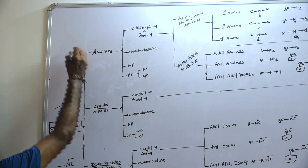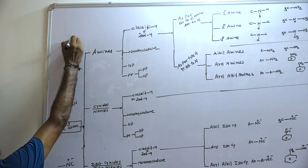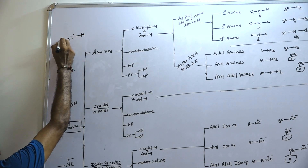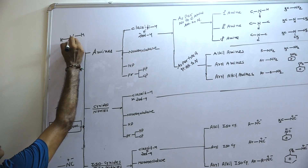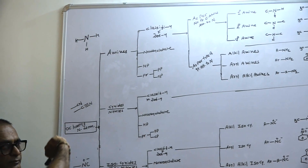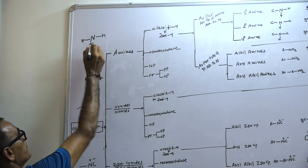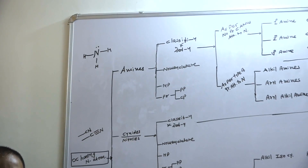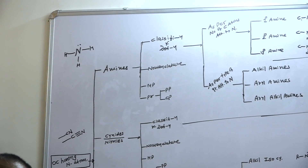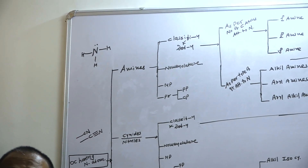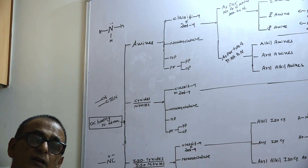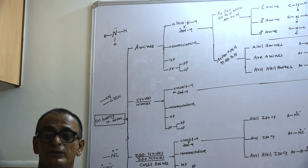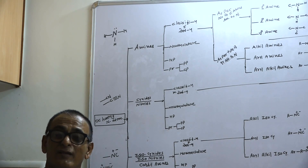Amines are derivatives of ammonia. Ammonia is NH3. When nitrogen forms three bonds, one lone pair of electrons is present on the nitrogen atom. As per Lewis theory, a substance that can donate a pair of electrons is known as a Lewis base. That is why ammonia acts as a base.